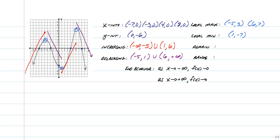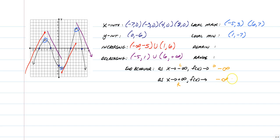As far as end behavior goes, we just look at what it's doing at the ends. As we go to the left, the graph goes down, so it's going to negative infinity. And as x goes to positive infinity, which we know is to the right, our graph is going down again, so it's going down to negative infinity.